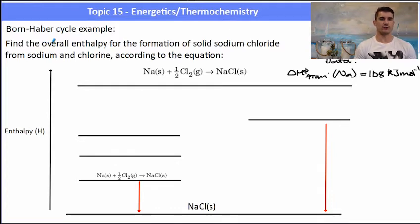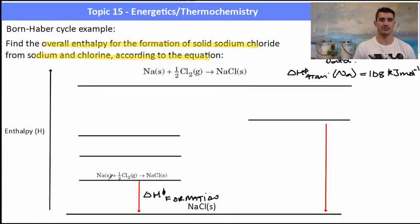So a Born-Haber cycle. Find the overall enthalpy for the formation of solid sodium chloride from sodium and chlorine according to the equation given here. One of the bits of data that they'll give you might be some atomization of some of the metals. So we need to work out the delta H of formation for that reaction. It's delta H of formation because we've got our standard states of our elements forming the standard state of the ionic compound. So the first thing that will need to happen is our sodium as a solid will be atomized into sodium as a gas. So that's the delta H of atomization and that information was given up the top. So that's 108 kilojoules.